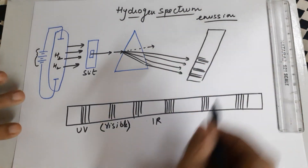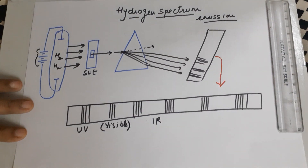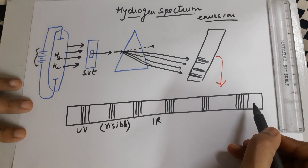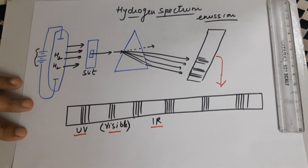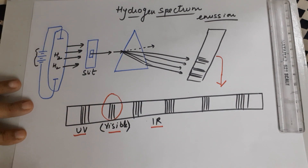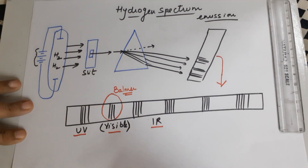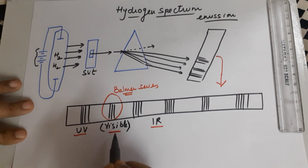This hydrogen spectrum had lines — a lot of lines — all over the area: in the UV region, in the visible region, as well as in the infrared region. The first to be identified were those in the visible region because they were easy to observe, and these lines were observed by Balmer.